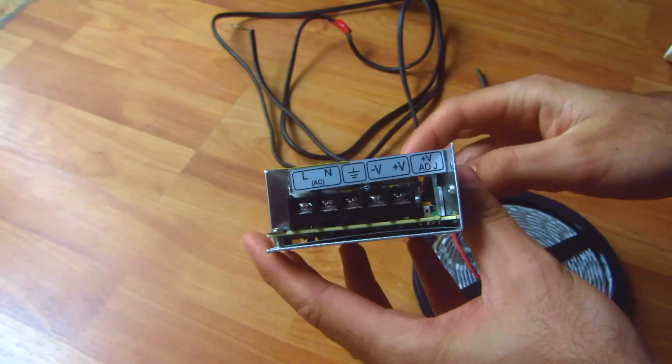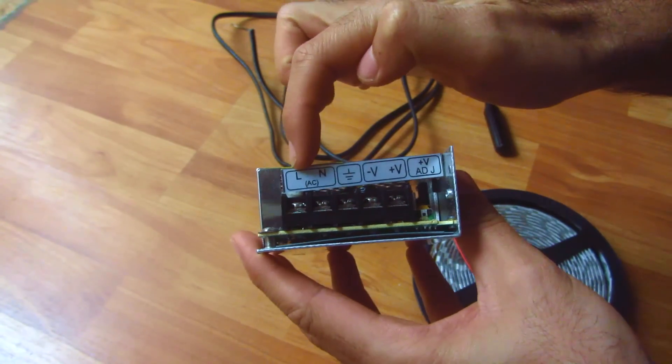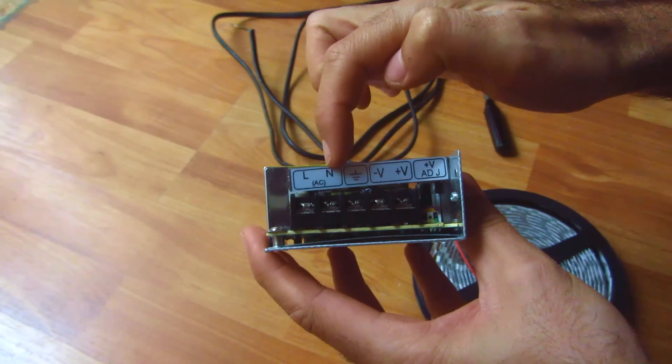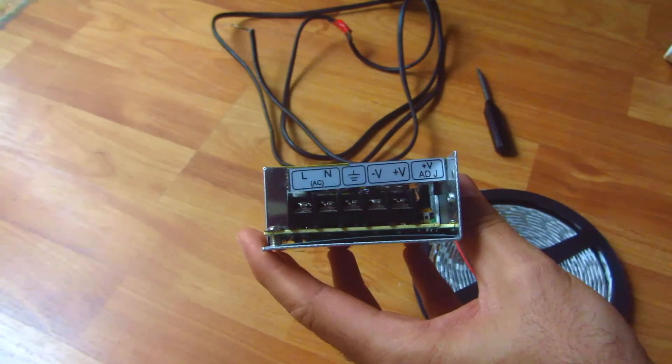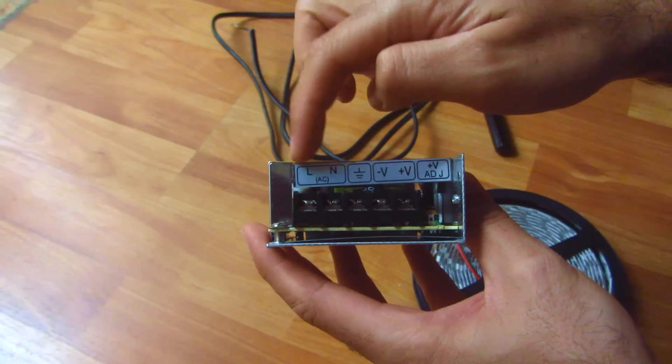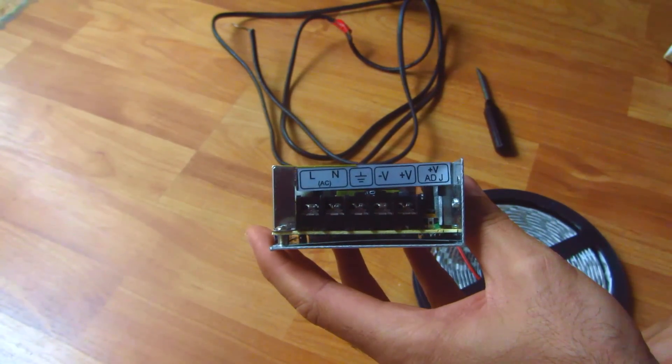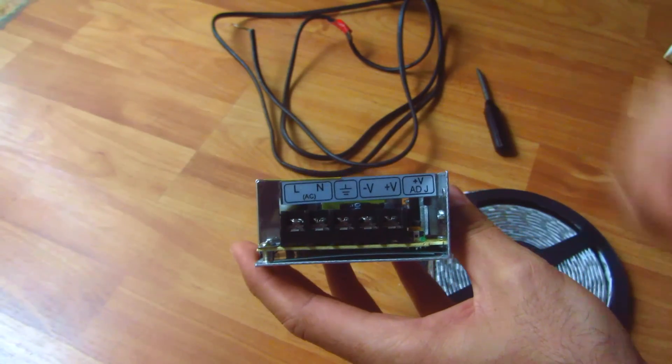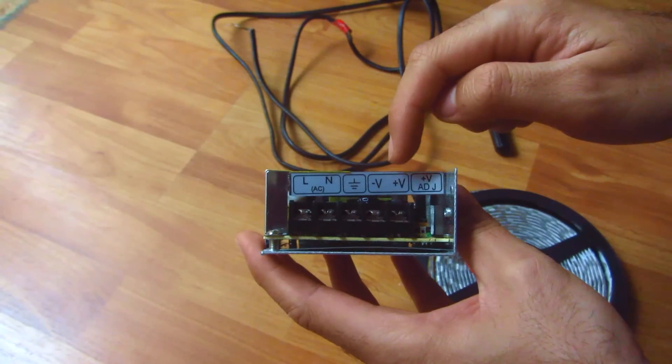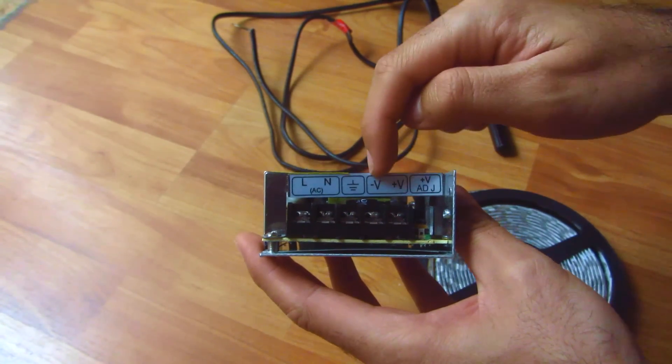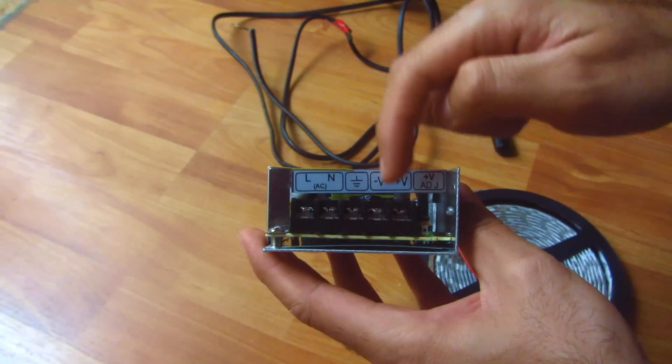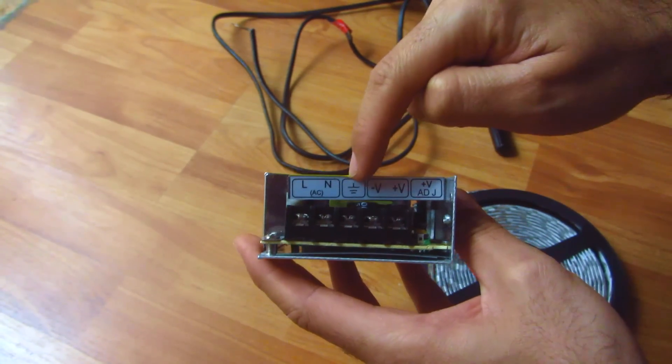We have an L and an N - that's the line and neutral of the AC input. The one on the right side is the output, the positive and negative for 12 volts DC, and the middle one is a grounding connection.